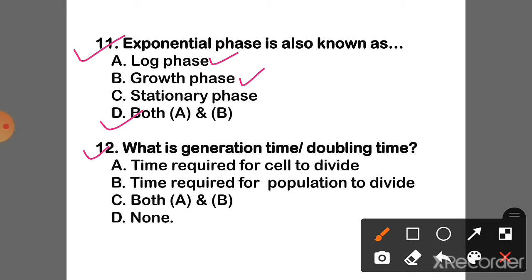Question 12: What is generation time or doubling time? The correct answer is Option C — Both A and B: the time required for a cell to divide and the time required for a population to double.